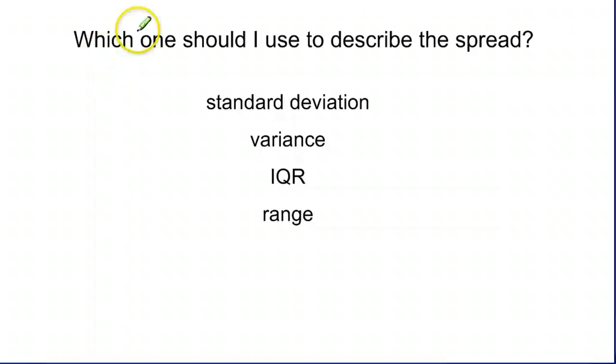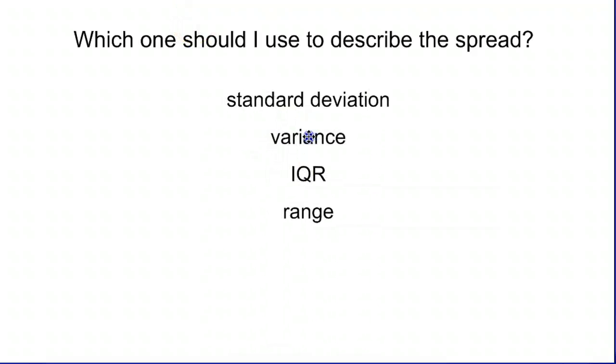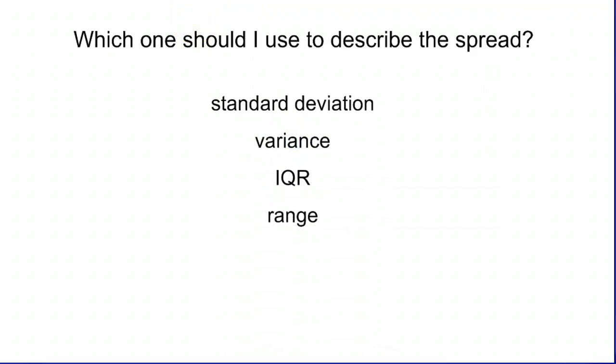So looking at this, which of these should I actually use to describe the spread? The variance, you're typically not going to use a whole lot. It comes up in formulas when you start doing lots of advanced stats. But on a day-to-day basis, we're typically just going to talk about the standard deviation. Same thing with the range. The range has its useful purposes. But for the most part, we're going to only use the interquartile range.